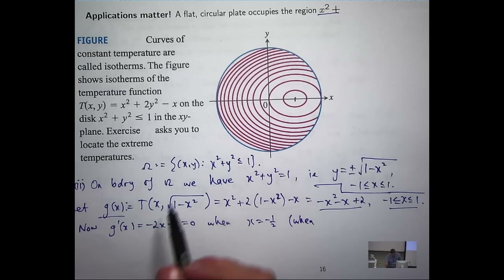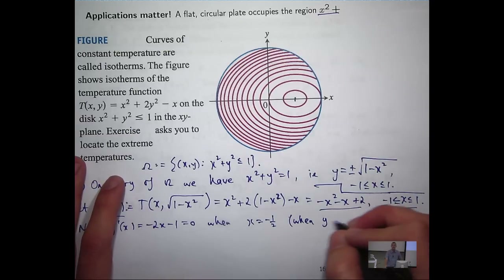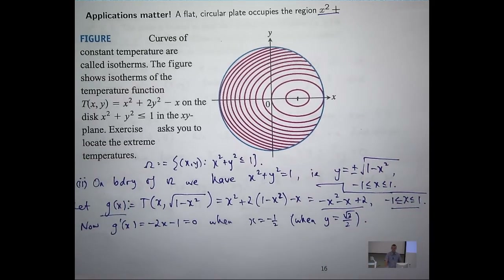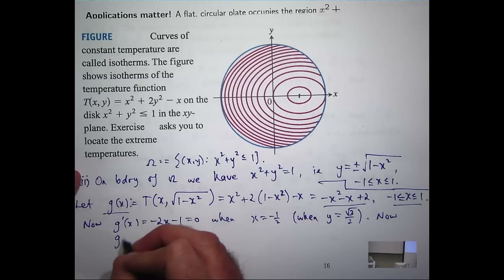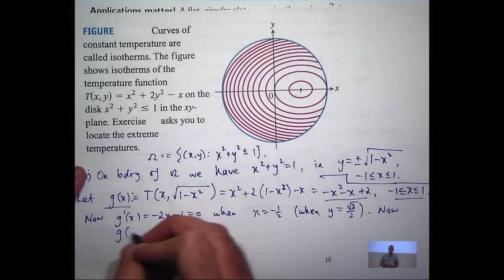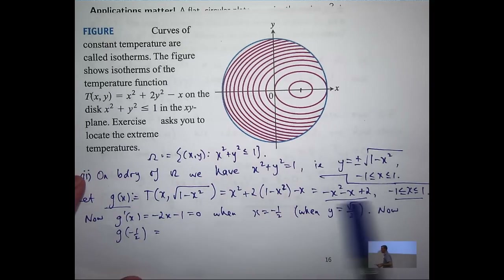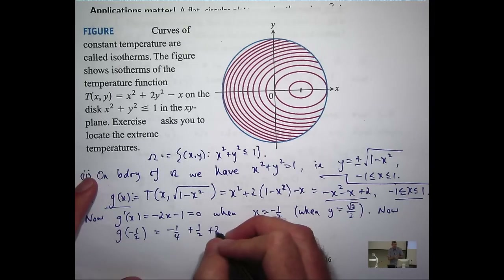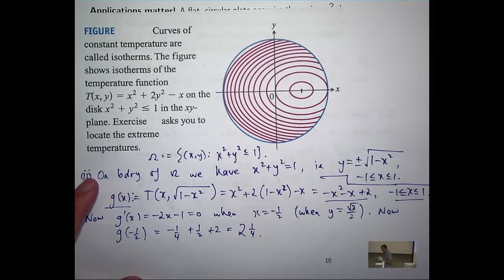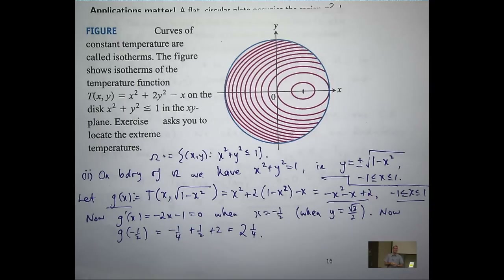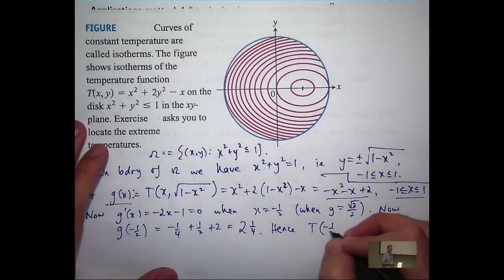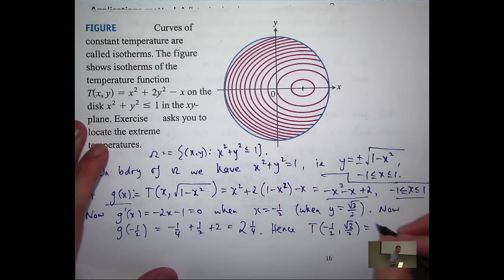If x equals negative one half, then y will be something like root three over two — that's just from y equals root (1 minus x squared). So let's test the value of g at that point. If I plug in x equals minus one half, I'll get the temperature T of (minus one half, root three over two) equals two and one quarter.